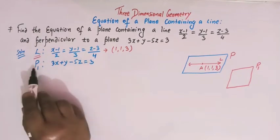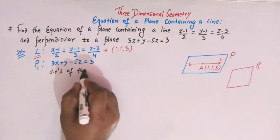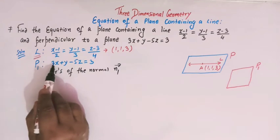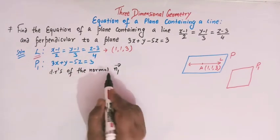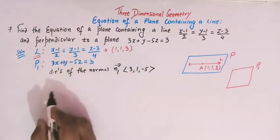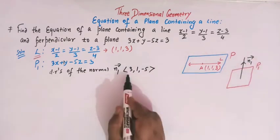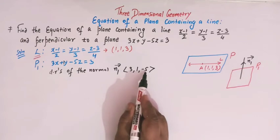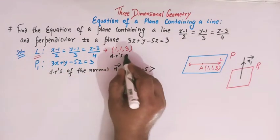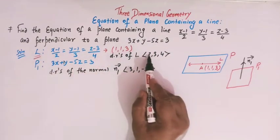If we look at the equation of plane P1, we see that the direction ratios of the normal vector n1 are given by the coefficients of x, y, and z. So the DRs of the normal to P1 are 3, 1, and minus 5. From the equation of line L, the DRs of line L are 2, 3, and 4.